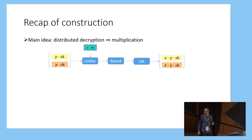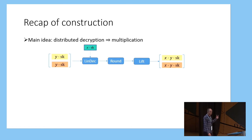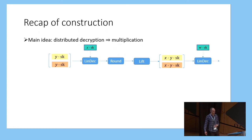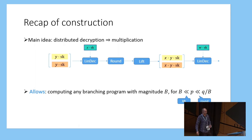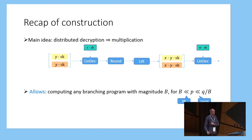Putting these three things together, we can get a complete multiplication procedure based on the distributed decryption technique. We have a public input ciphertext encrypting x times by the secret key, and a memory value representing additive secret shares of y times by the secret key. Then we apply the three techniques of linear decryption, rounding, and lifting to finally end up with another memory value of the product x times y. Because these are shares modulo q again, we can just use them again for the next multiplication with another input value and keep going as many times as we want. This gives us a homomorphic evaluation procedure that allows us to evaluate an arbitrary branching program, as long as every intermediate value in the computation has bounded magnitude satisfying the rounding and lifting lemma conditions.